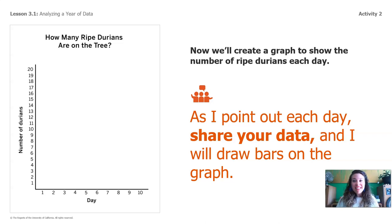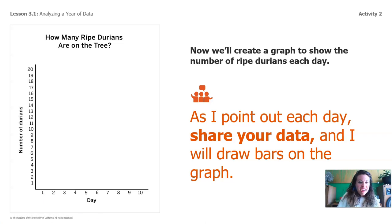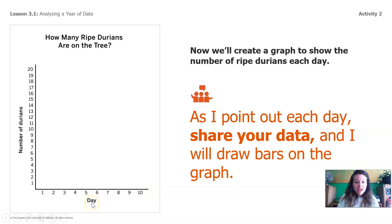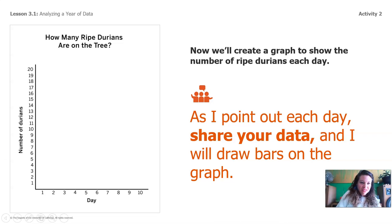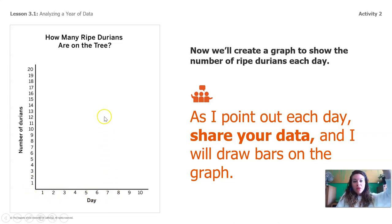All right, we are going to use the data about the ripe durians to create a graph. Have you ever seen a graph like this before? Across the bottom is called the x-axis, and the x-axis shows us the number of days — day 1, day 2, day 3, all the way up to day 10. This axis going up the side is called the y-axis, and the y-axis has on it the number of durians. So we're going to go across the x-axis to find the day, and then go up to mark the number of durians.